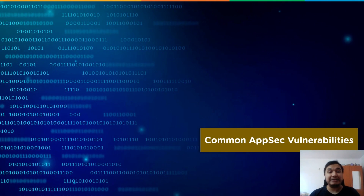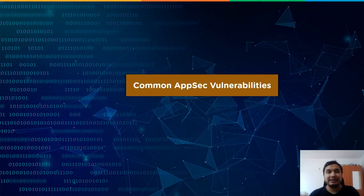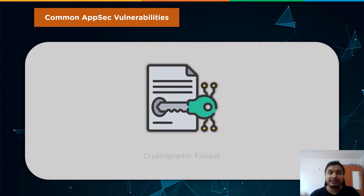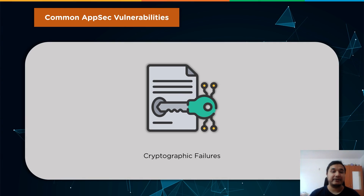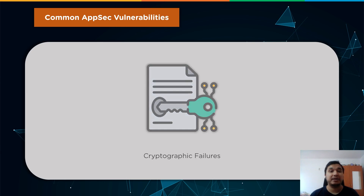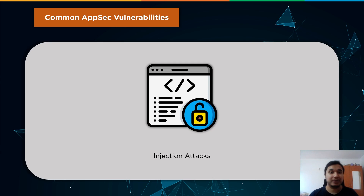Now let us go through some of the most common vulnerabilities that these frameworks face. First is cryptographic failure. When data is not adequately safeguarded in transit and at rest, cryptographic failures — formerly known as sensitive data exposures — occur. They have the potential to reveal credentials, health information, credit card details, and personal information, depending on the type of data being protected.